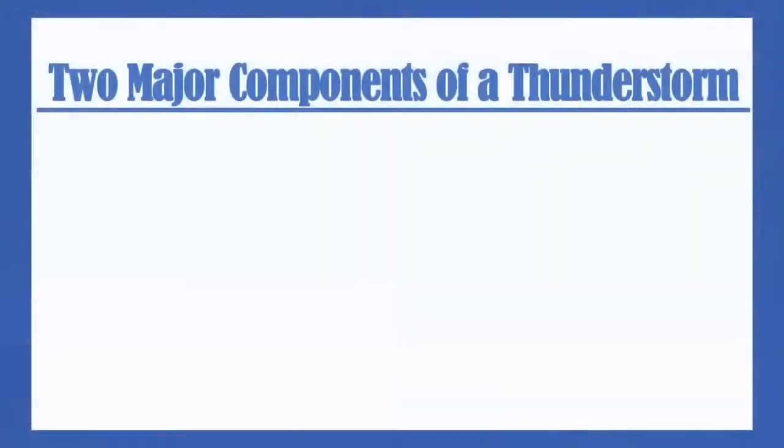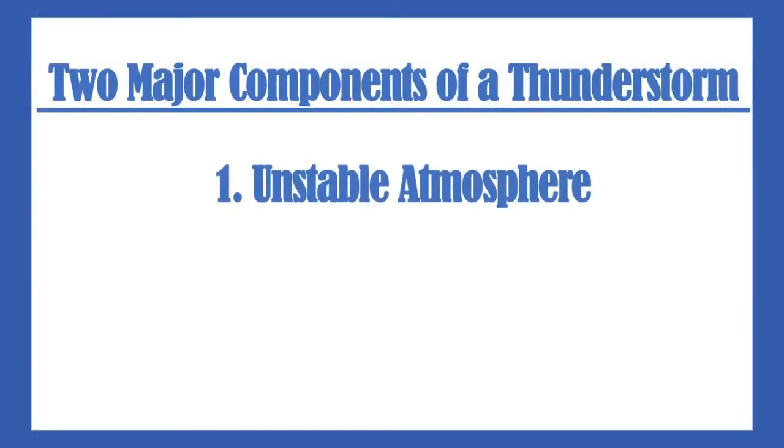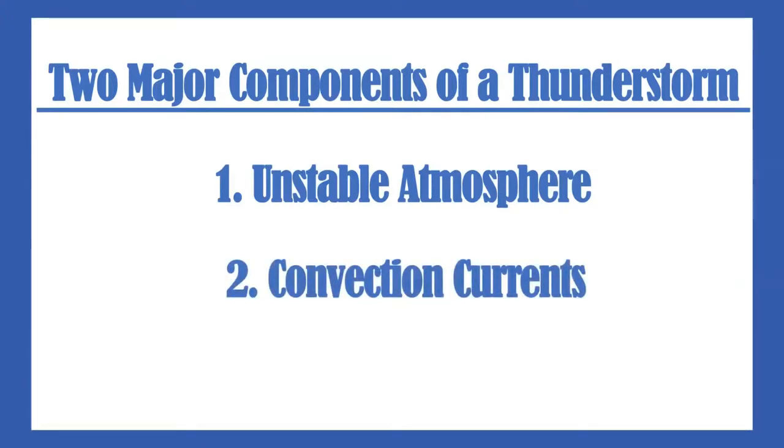When these large air masses collide, it causes an unstable environment. This leads to perfect conditions for convection currents to take control of the atmosphere, which ultimately helps with the formation of a thunderstorm.